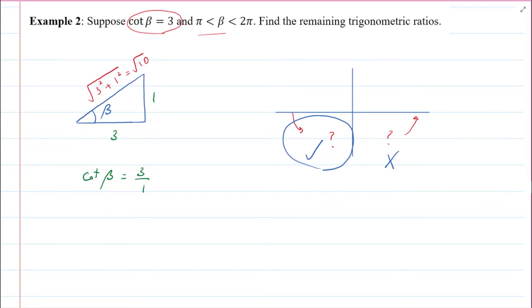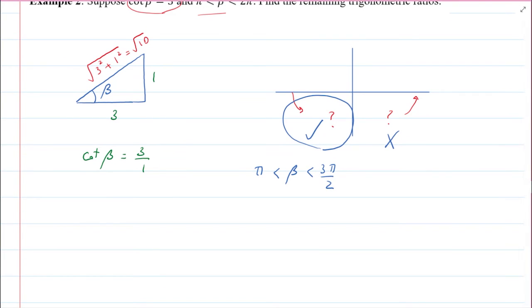So this one, I'm going to write beta is between pi and 3 pi over 2. And this means I can find sine of beta now, cosine of beta, tan of beta, cotan obviously is given, secant of beta, and cosecant of beta. So as you see here, I can use these identities to actually find, or I can use the sides to find all of these ratios.